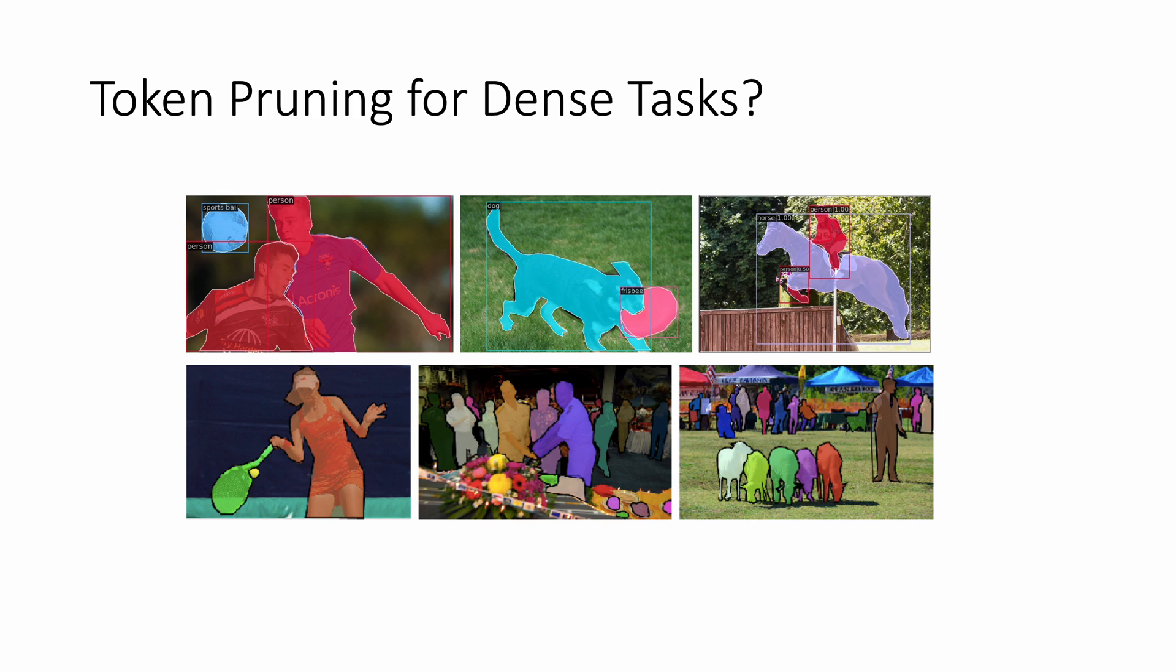To achieve this goal, we re-evaluated the designs of token pruning within the context of dense predictions. This led us to a compact selective vision transformer that can first prune tokens on object detection and instance segmentation.